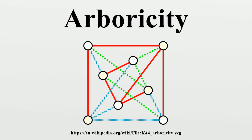The star arboricity of a graph is the size of the minimum forest, each tree of which is a star, into which the edges of the graph can be partitioned. If a tree is not a star itself, its star arboricity is two, as can be seen by partitioning the edges into two subsets at odd and even distances from the tree root respectively. Therefore, the star arboricity of any graph is at least equal to the arboricity, and at most equal to twice the arboricity.